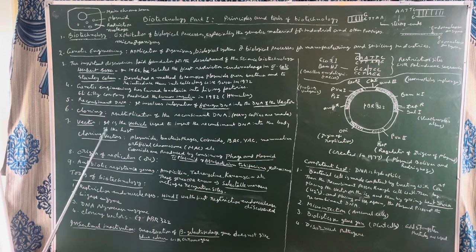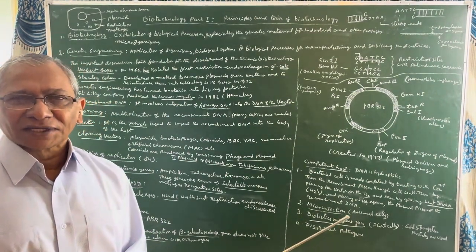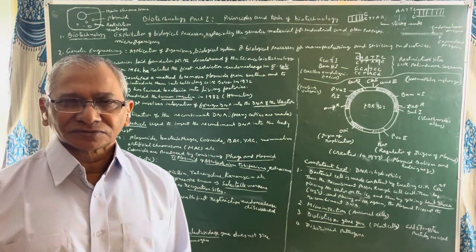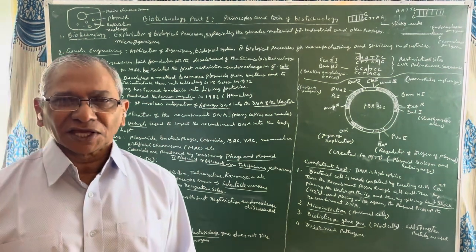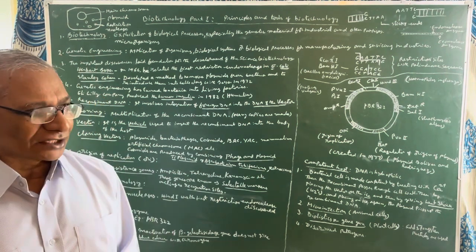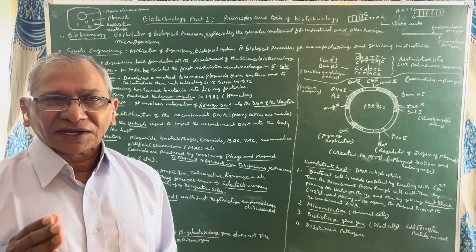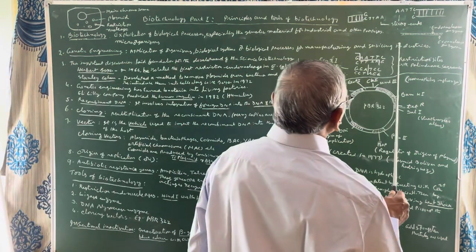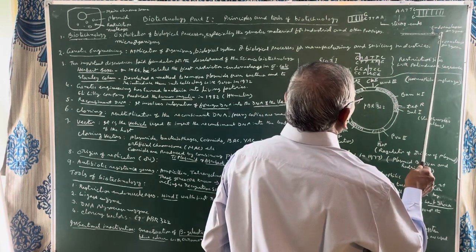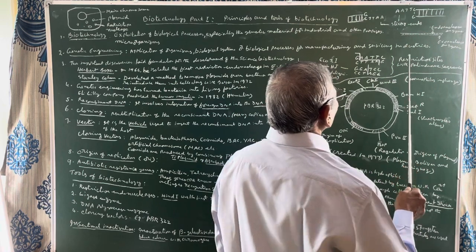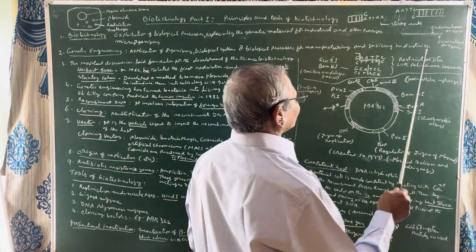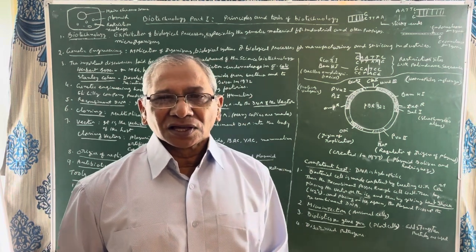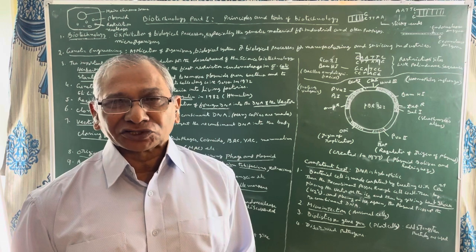Nucleases are a type of enzyme that cut or break DNA into small pieces. Nucleases are of two types: exonucleases and endonucleases. Exonucleases cut DNA from one end of the molecule. Endonucleases make a cut inside the DNA — not at the end but inside the molecule.